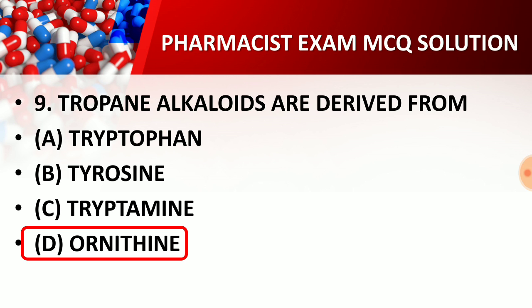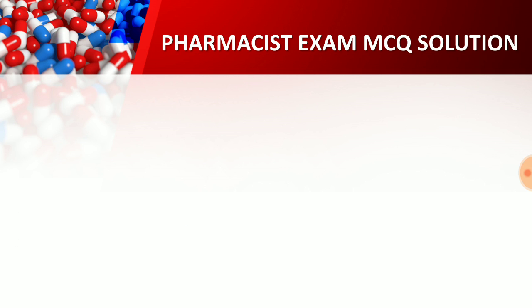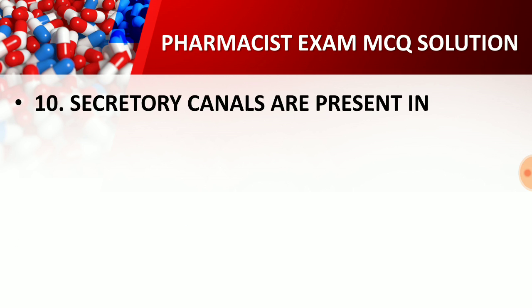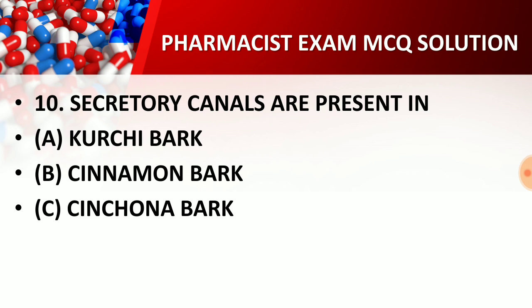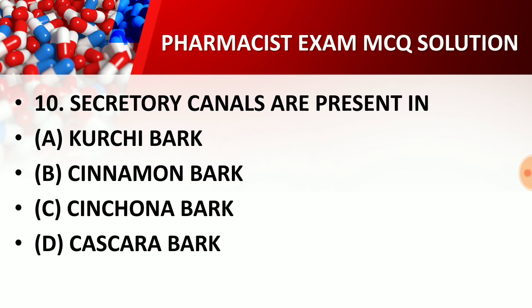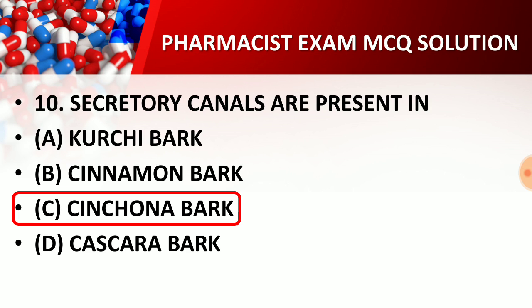Question ten: secretory canals are present in — option A: urchi bark; option B: cinnamon bark; option C: cinchona bark; option D: cascara bark. The right answer is option C — cinchona bark. Secretory canals are present in cinchona bark.